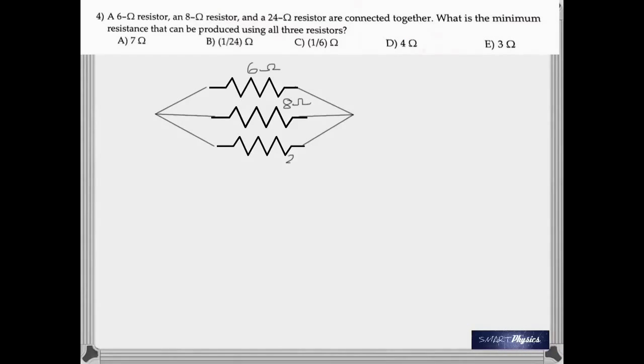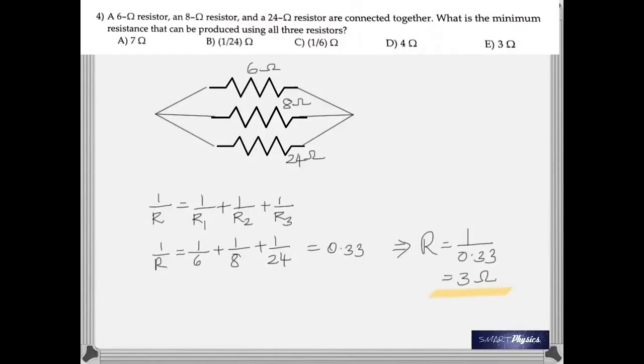You have 6, 8 and 24 ohms connected. What is the minimum? Of course, a minimum resistance is produced whenever you put the resistances in parallel. So, 1 over R is 1 over 6 plus 1 over 8 plus 1 over 24, which comes out to be 0.33. But remember there, on the left hand side, you have 1 over R. So, you've got to take 1 divided by 0.33 to get R. So, that's 3 ohms.